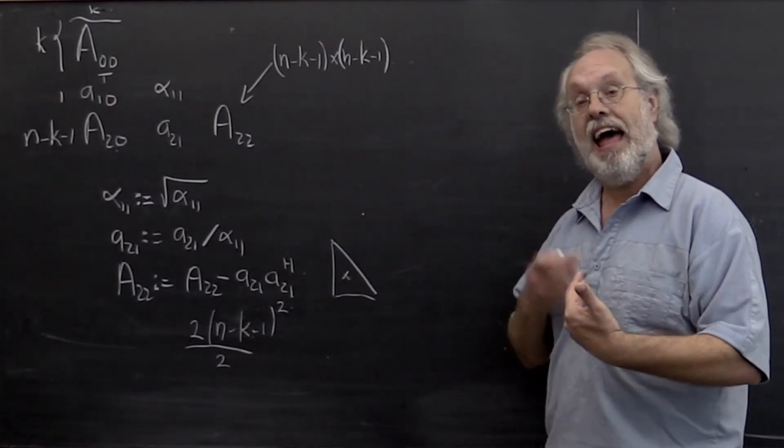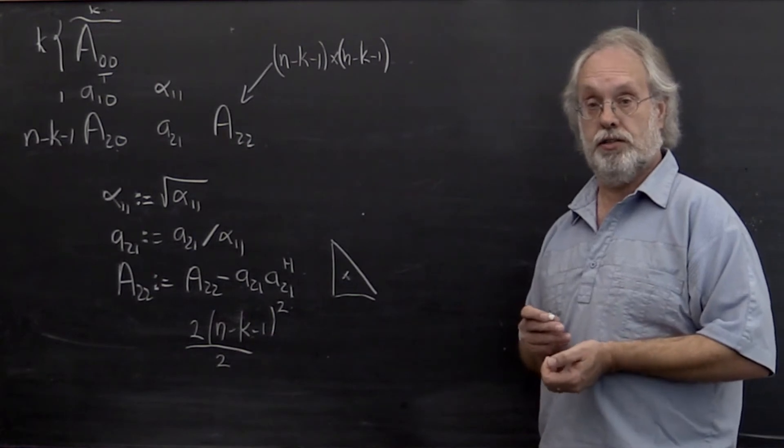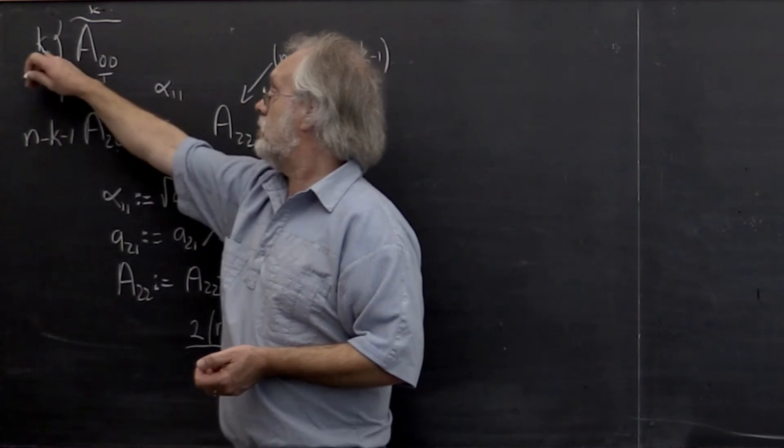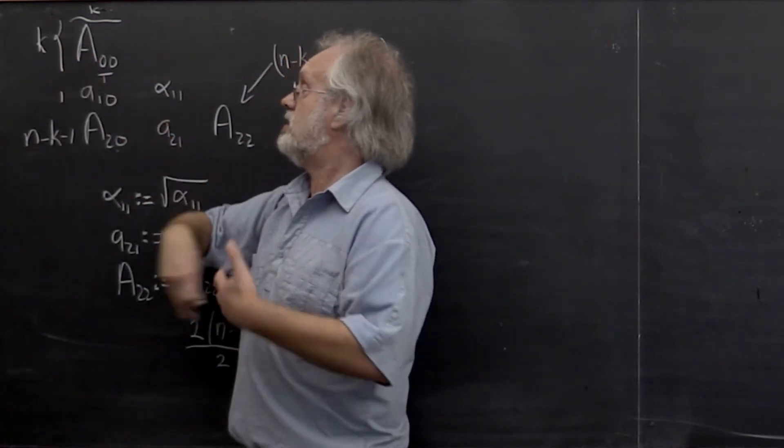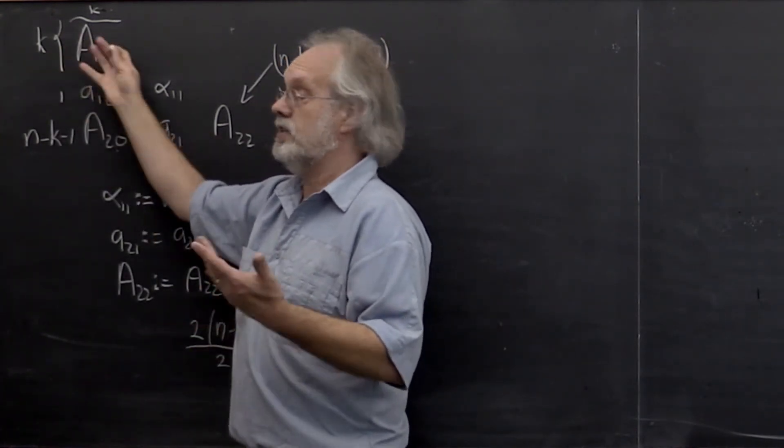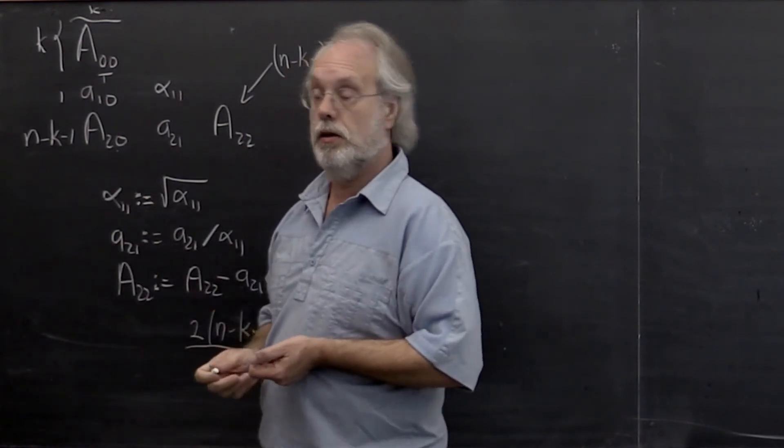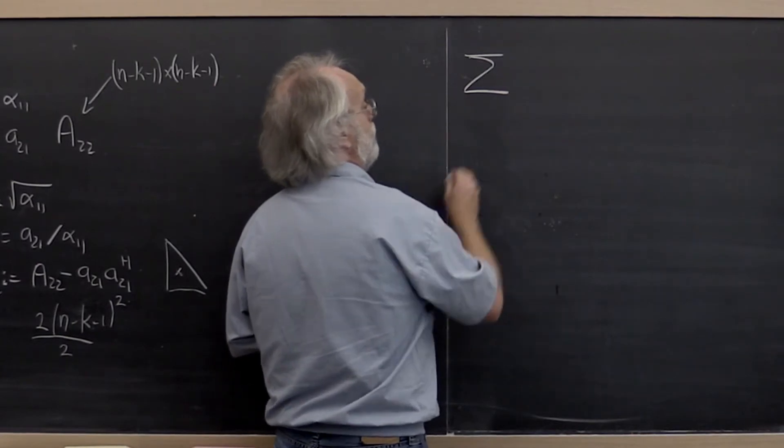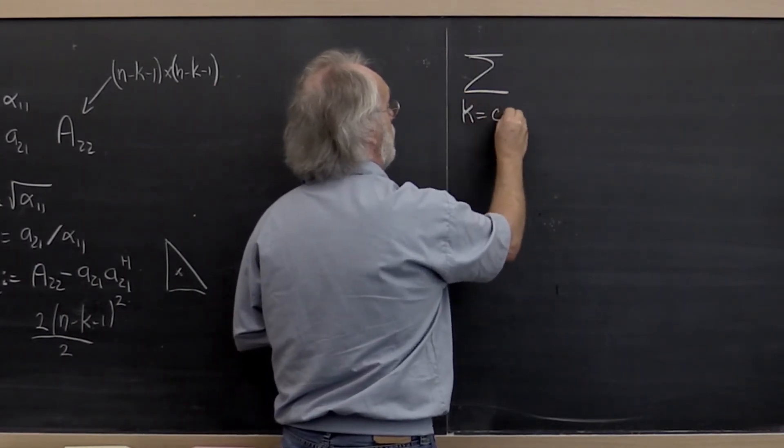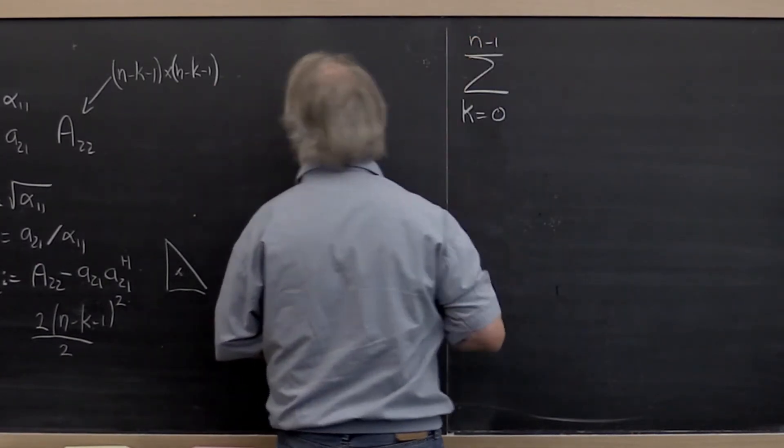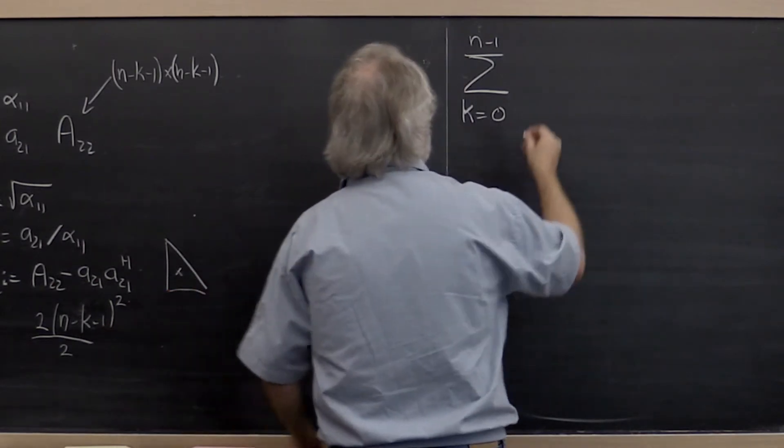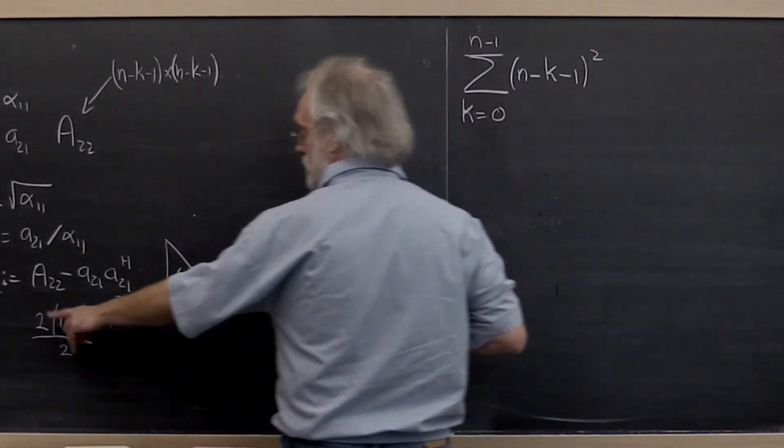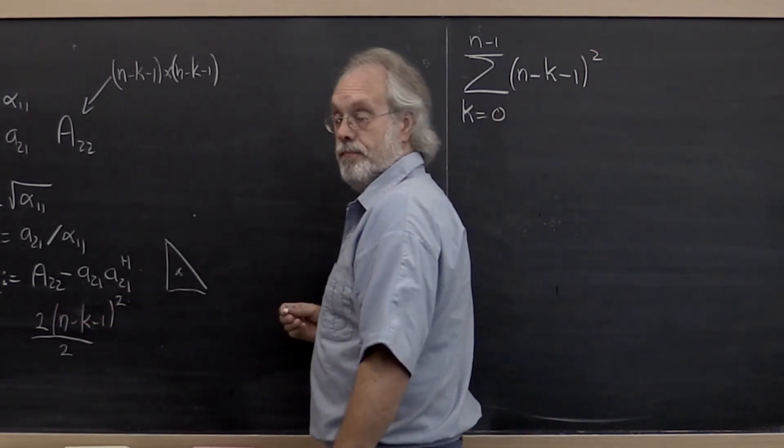So now we need to add that expense over all iterations. And notice that in the first iteration k is 0 by 0. So this matrix is 0 by 0. In the next iteration it's 1 by 1. k is equal to 1. And so forth. So what that means is that we want to do the sum from k equals 0 to n minus 1 of this expense right here which we can write as n minus k minus 1 squared because the 2's cancel.